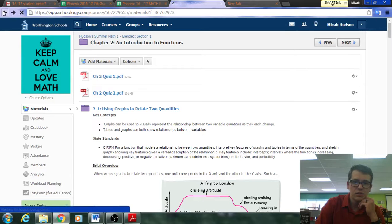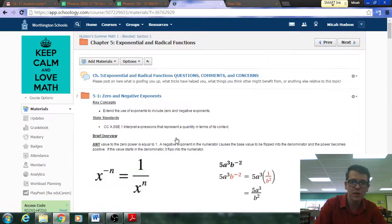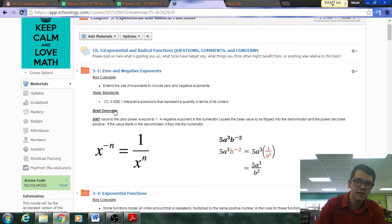Once you either work beyond those or test out of those chapters, we get into the new material. So let's say you go on to chapter five, our new material. Notice I still, in each of these, have the key concepts, state standards, and the brief overview. The key concepts comes from the publisher. That's their goals for that section, essentially.